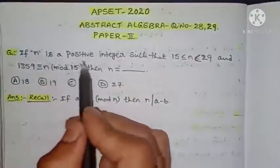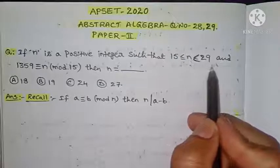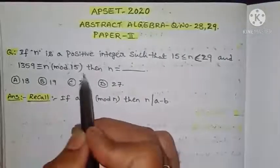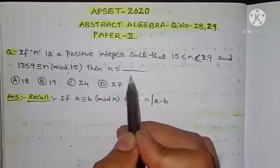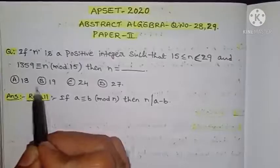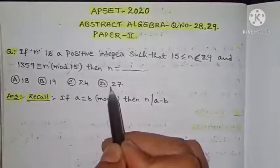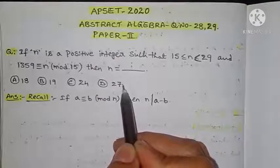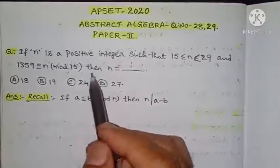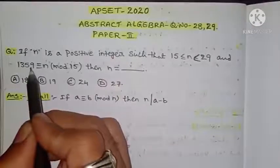The question is: if n is a positive integer such that 15 ≤ n < 29, and 1359 is congruent to n modulo 15, then n is equal to? The four options are: option A is 18, option B is 19, option C is 24, and option D is 27. We have to choose one correct option.